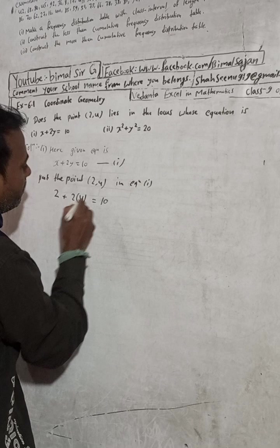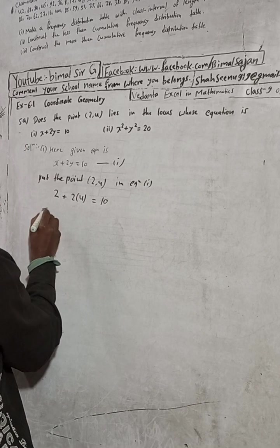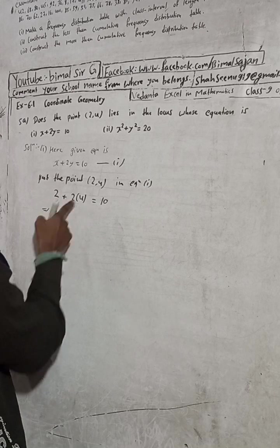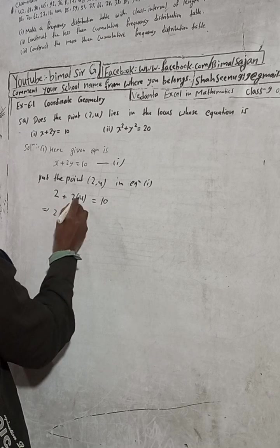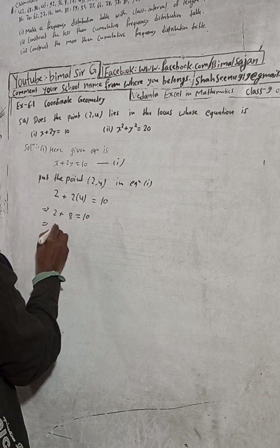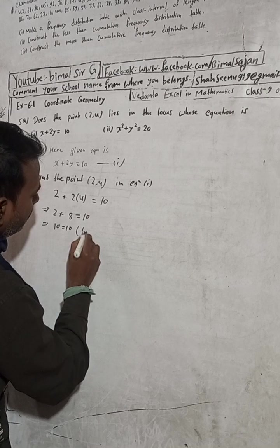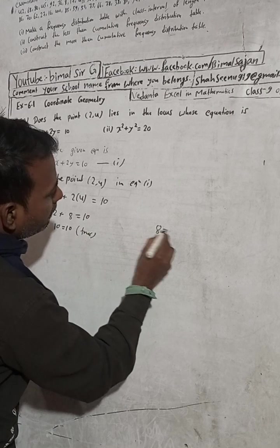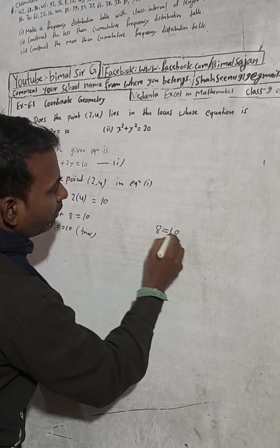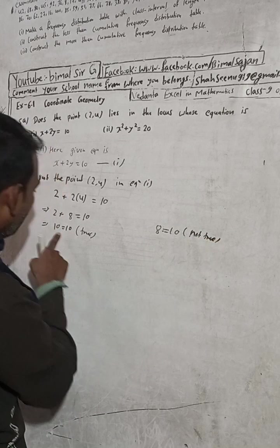In place of y put 4, but write here because this is multiplied here, 2 into 4. Okay now, this is 2 plus, 2 times 4 is 8. First multiply 2 times 4, don't add 2 and 4. So this is equal to how much? 2 + 8 is 10 = 10, and 10 = 10 is true. This is true.